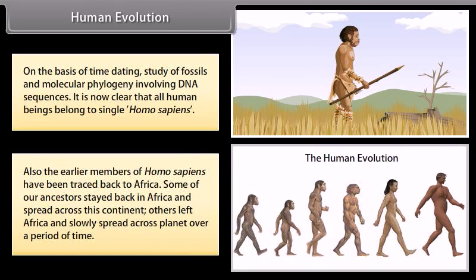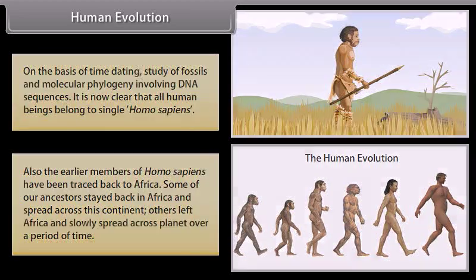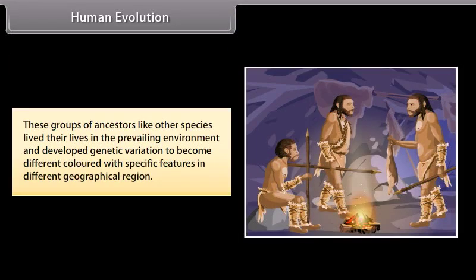The earlier members of Homo sapiens have been traced back to Africa. Some of our ancestors stayed back in Africa and spread across that continent. Others left Africa and slowly spread across the planet over a period of time. These groups of ancestors lived their lives in the prevailing environment and developed genetic variation to become different in color and specific features in different geographical regions.